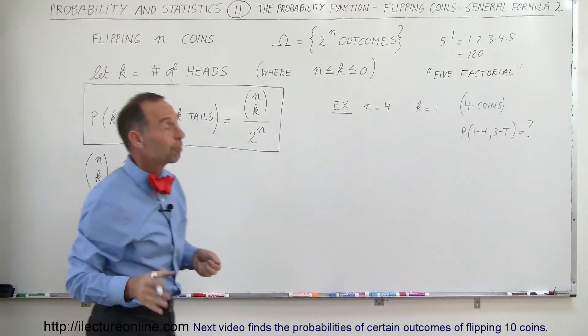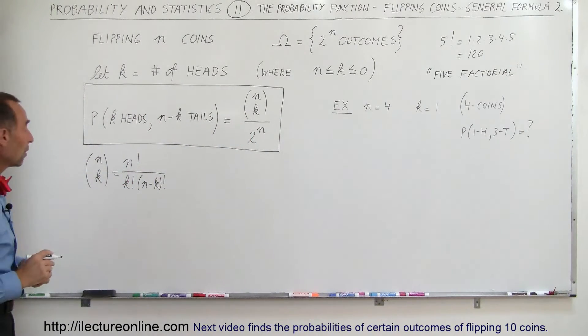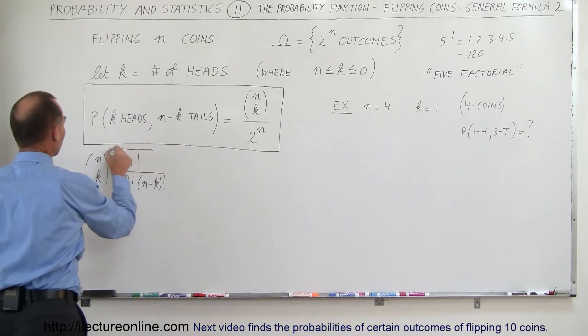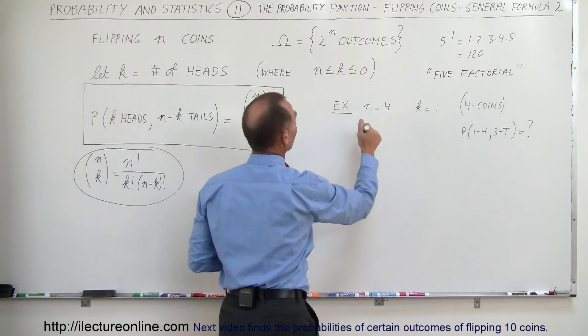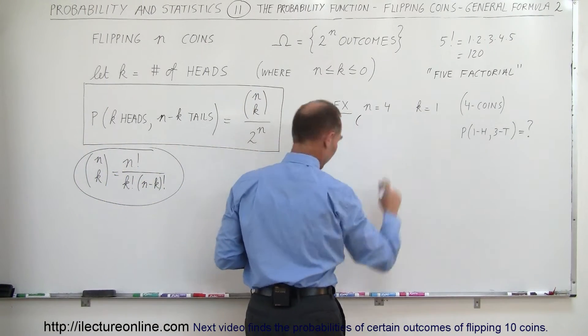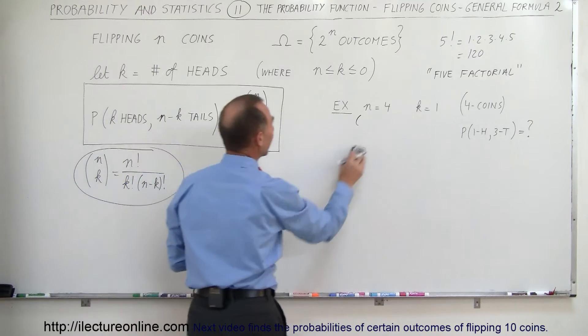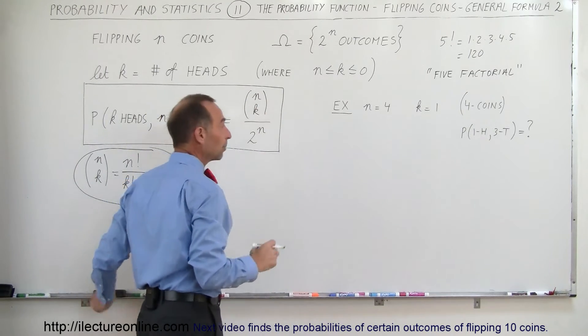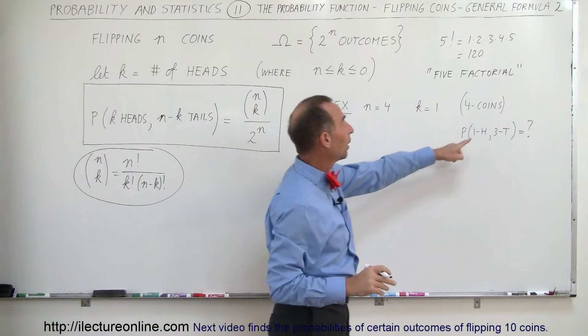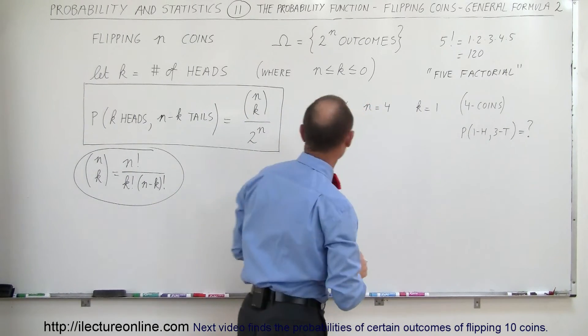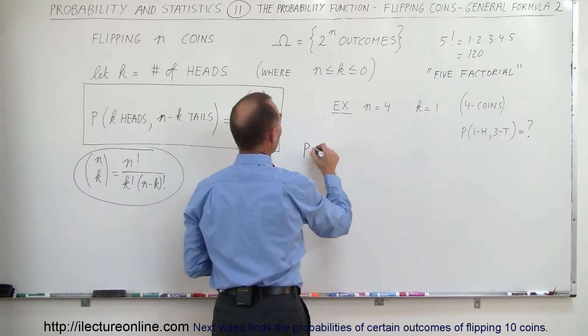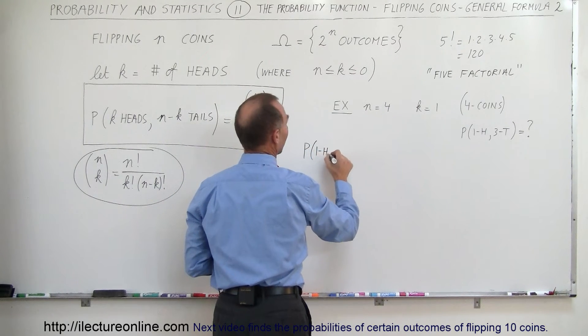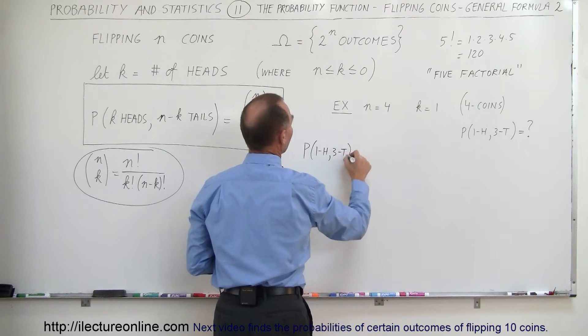We need factorials in order to solve the probability when we flip the coin. So there's our definition of that symbol. Now let's do an example. Let's say we have 4 coins. Let's say that the event, we want to find the probability of the event where we have 1 head and 3 tails. The probability that we have 1 head and 3 tails is equal to...